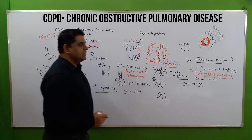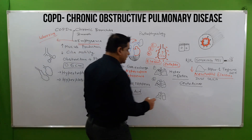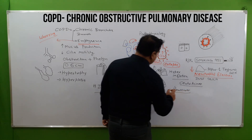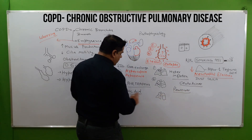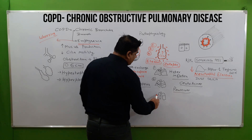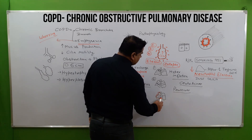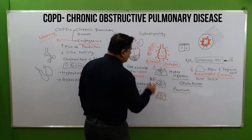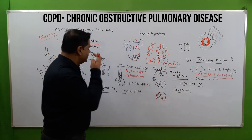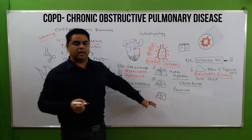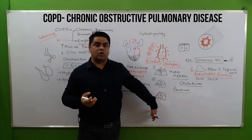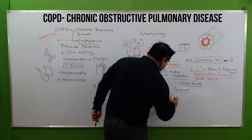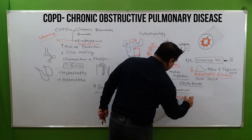When it occurs in the middle portion it is known as panacinar emphysema. When pocket formation is present all over the visceral and parietal pleura, blebs can form, which can rupture or cause bleeding and accumulation of pus. This can lead to pneumothorax or pneumonia.